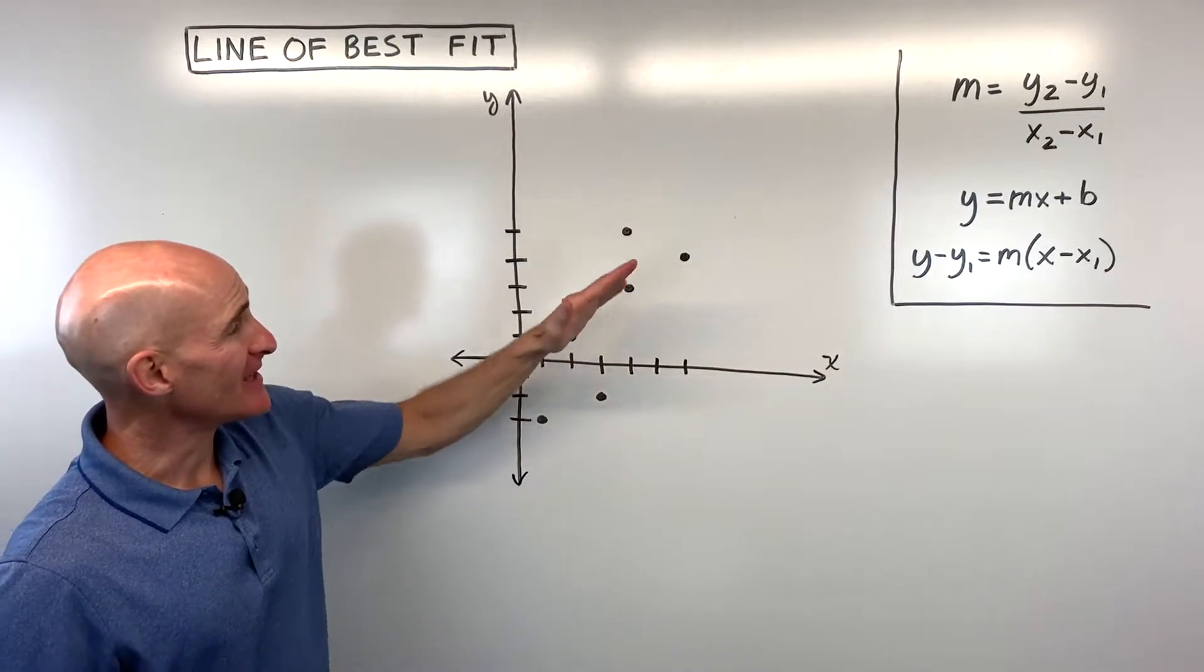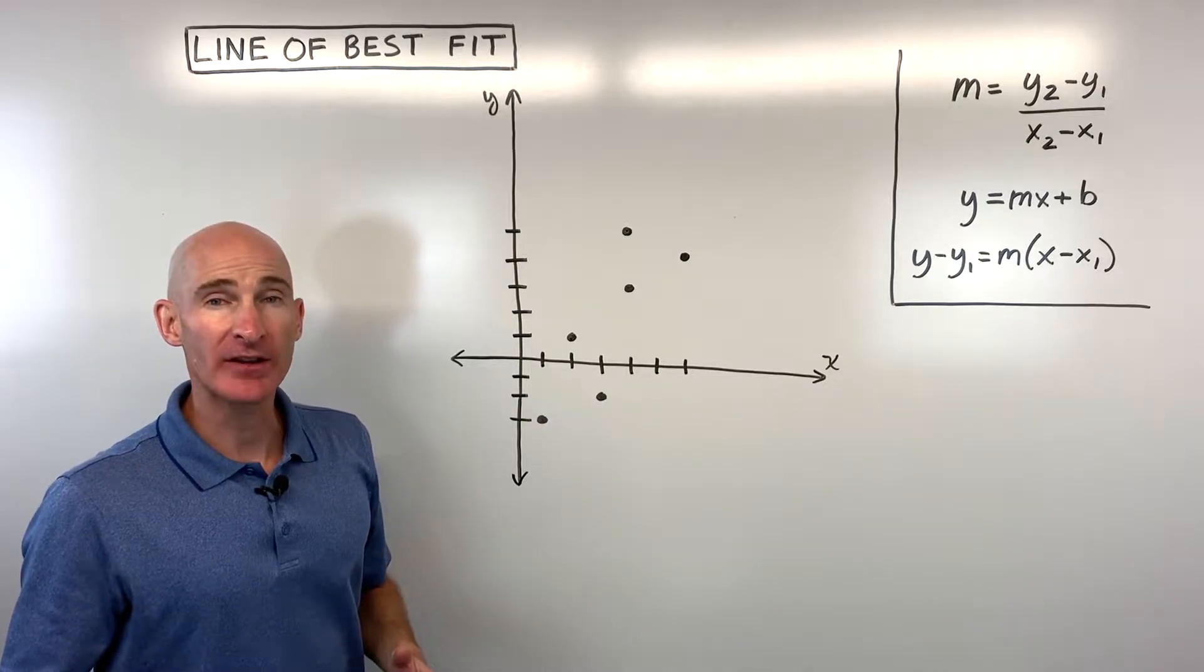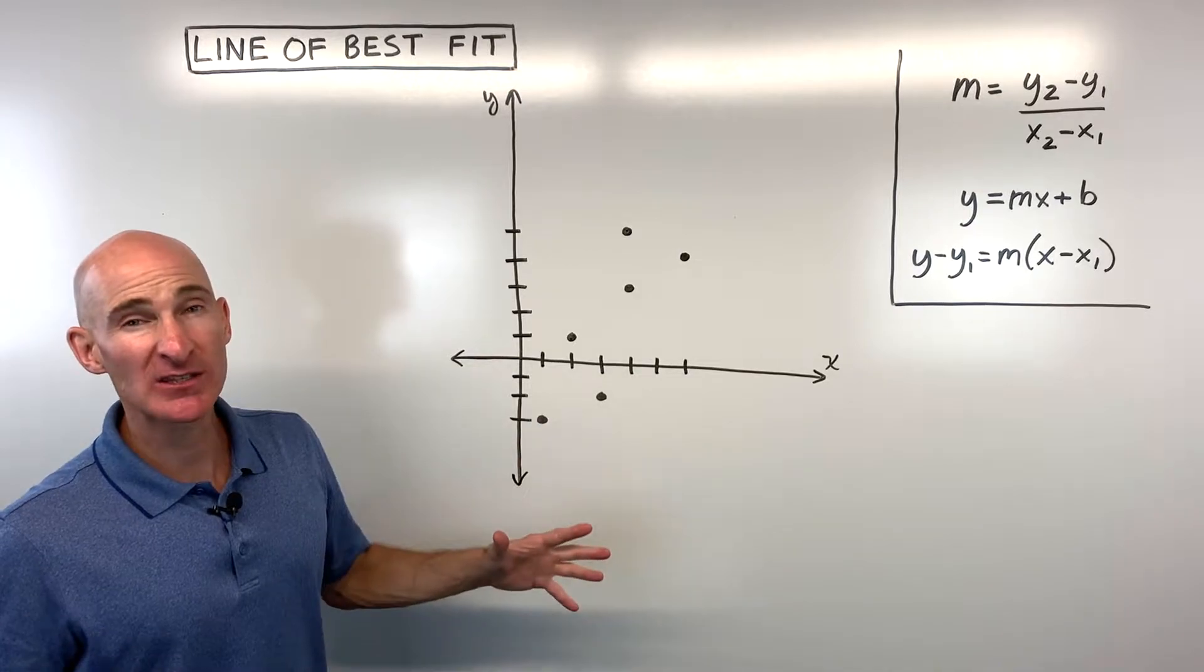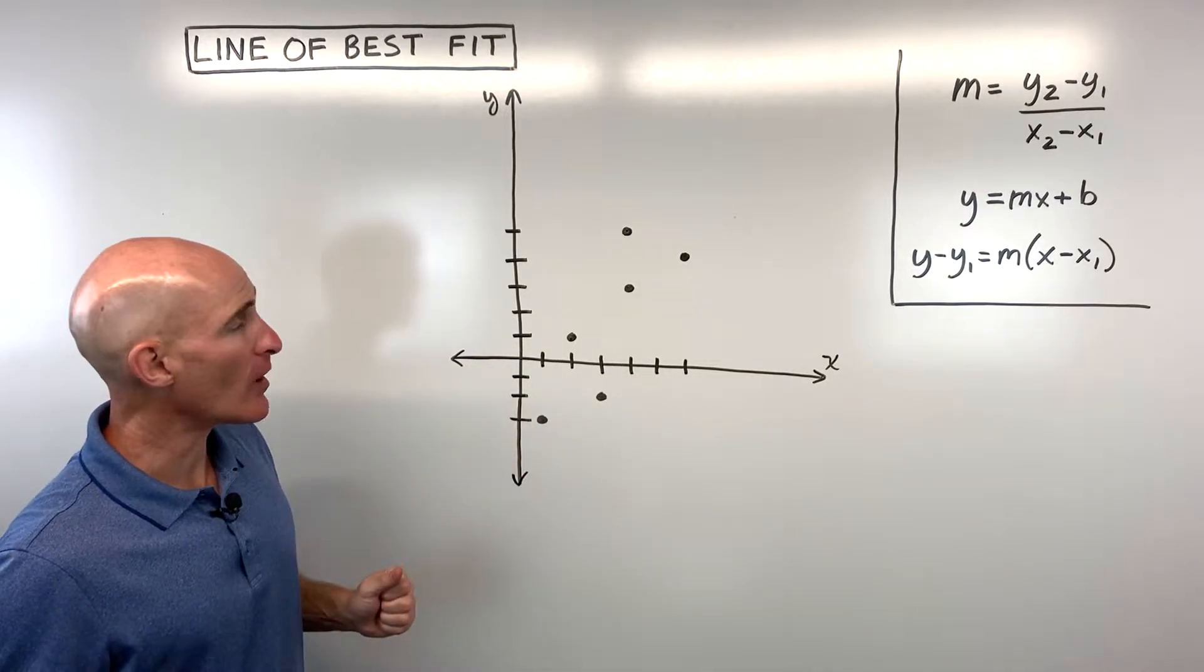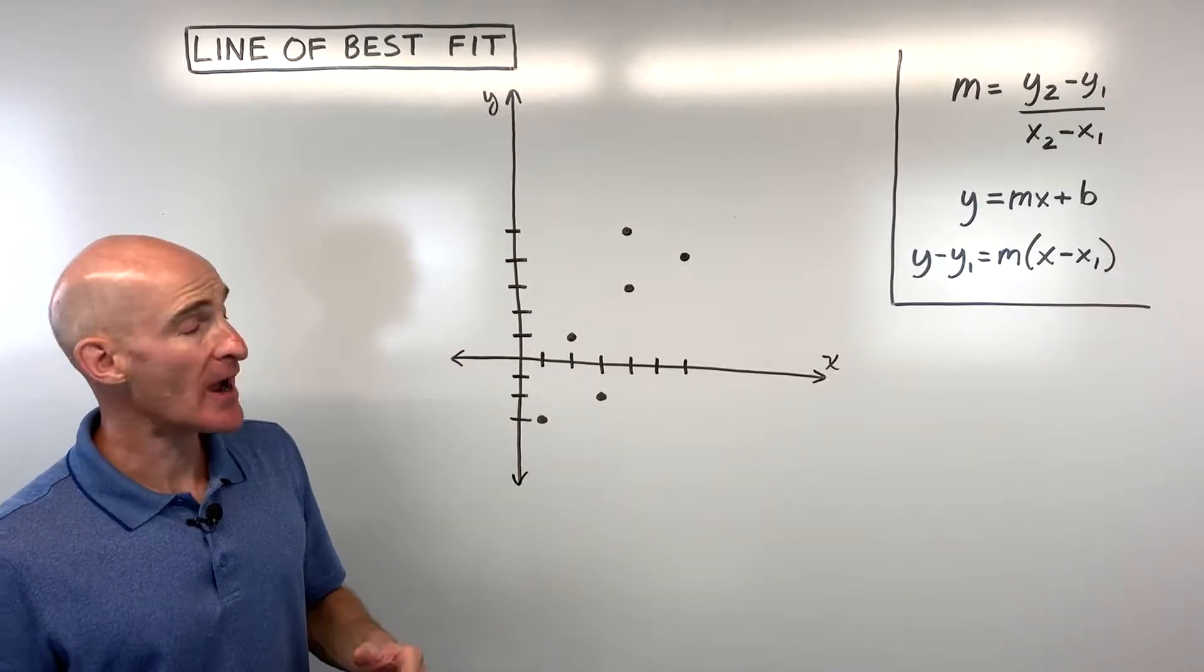Now, if you want to find the exact line of best fit, check out my video on linear regression using a graphing calculator. But for this video, we're going to do some estimation. We're going to basically do it by hand. It's kind of a rough way of doing it. So we'll go through two examples. You can practice one on your own if you want to get some practice.